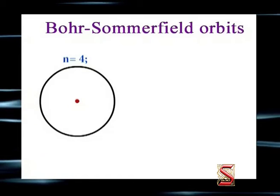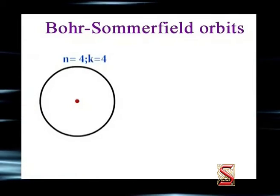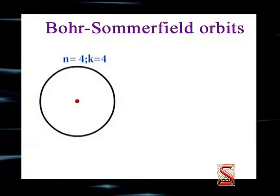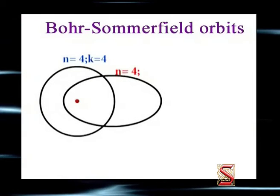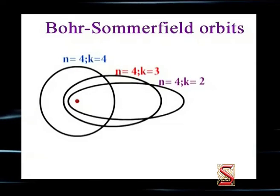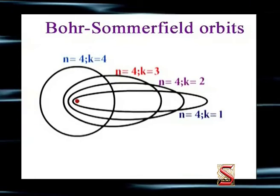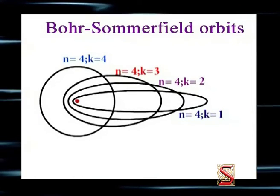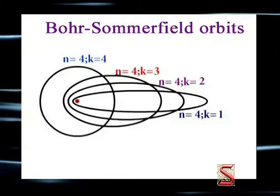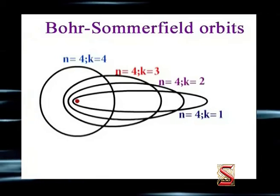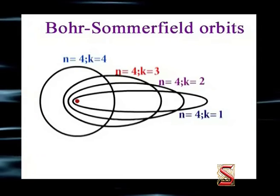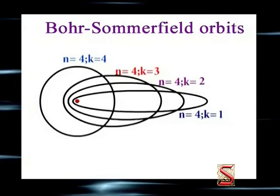When N equals 4 and K also equals 4 — that is, N equals K — the elliptical orbit becomes circular. But when N equals 4, K can vary from 4 to 1. As the K value decreases, the ellipticity increases. But K cannot be 0; in that case the minor axis would be 0 and the electron would have to pass through the nucleus. Thus, the number of possible values of K equals the principal quantum number N.